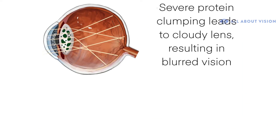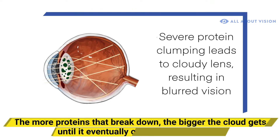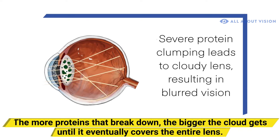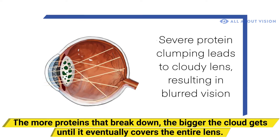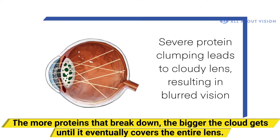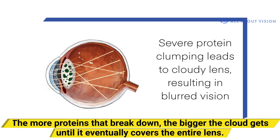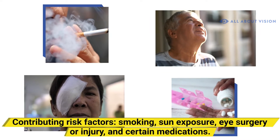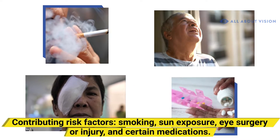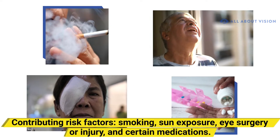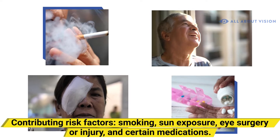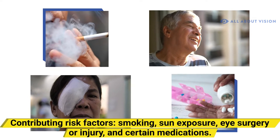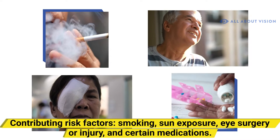The more proteins that break down, the bigger the cloudiness gets until it eventually covers the entire lens. Some things that may contribute to cataract development include smoking, sun exposure, eye surgery or injury, and certain medications.